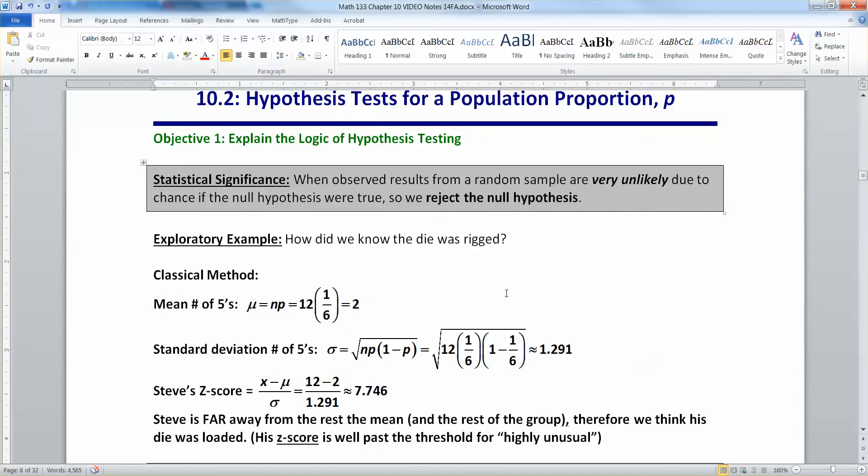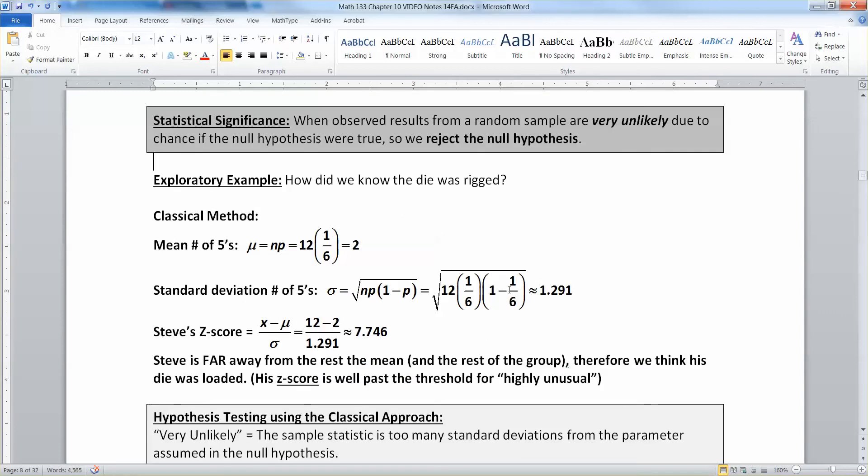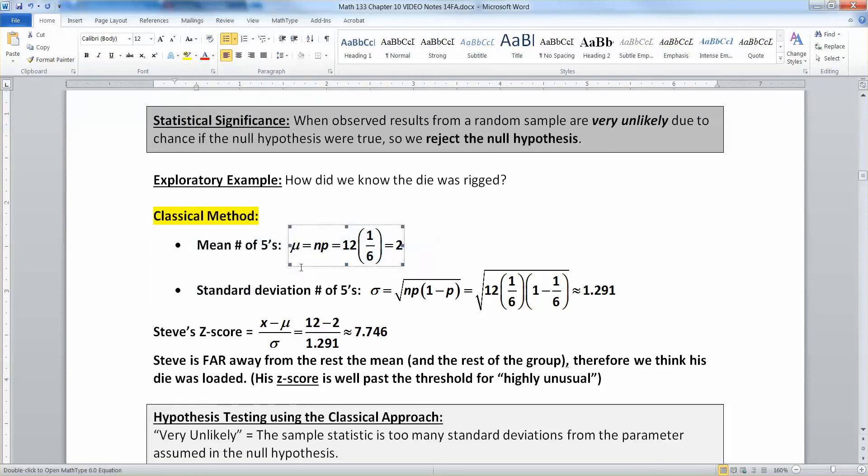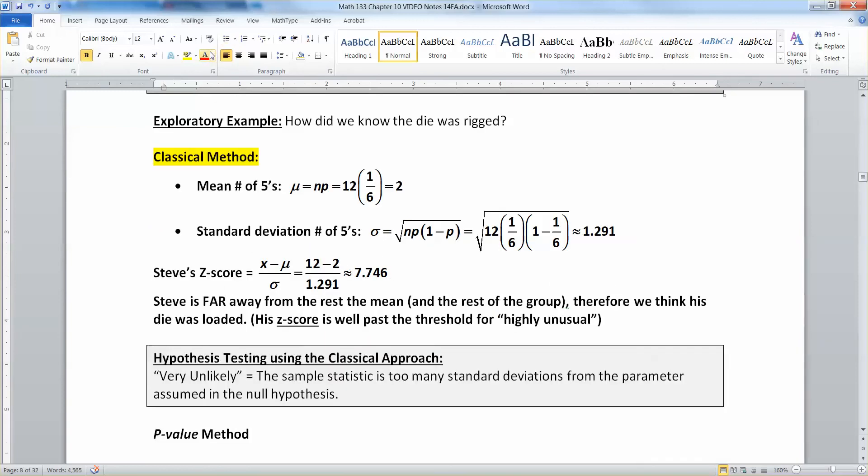Now let's remind ourselves of the example with the rigged die. We knew that the student Steve's data was rigged because the classical method showed that the mean is 2, the standard deviation is 1.291, and therefore Steve's Z-score is 7.746.